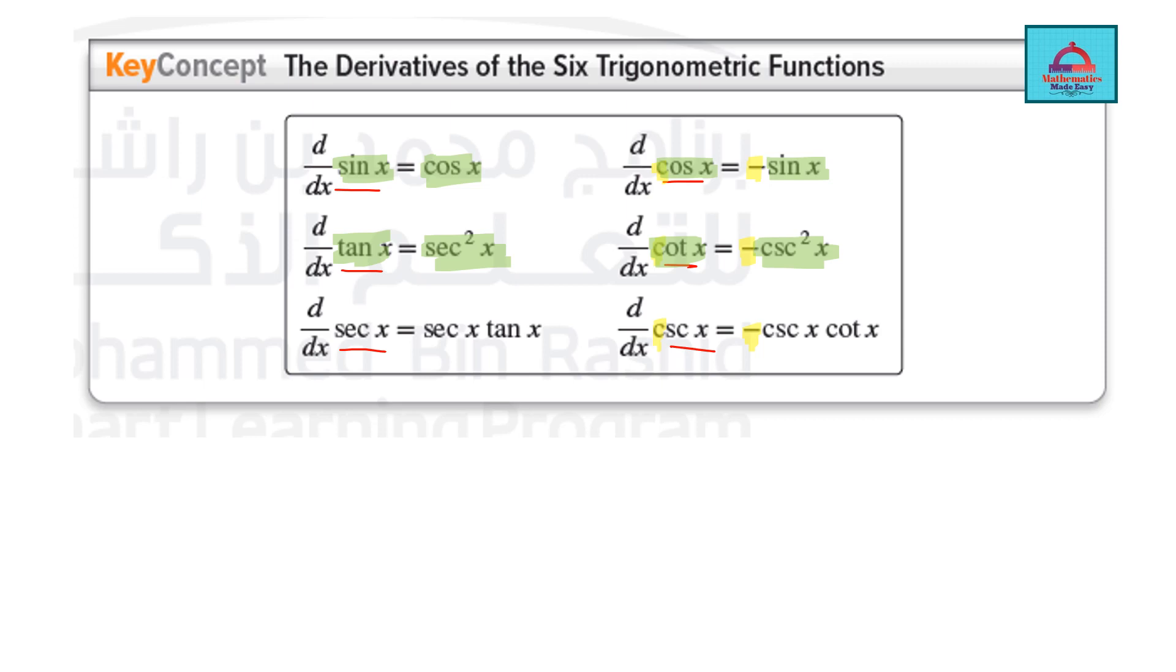Similarly, when it is secant the derivative is secant x tan x multiplied, and for d by dx of cosecant it is minus cosecant x cot x. Please learn this so you can use it in the questions for solving.